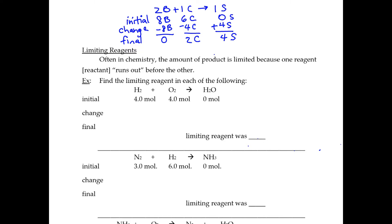So let's review. This is initially what we had — eight breads, six cheeses. We bridged from each one to the sandwiches to see which one would run out first. We figured out the bread ran out, so we used all the bread. We made four sandwiches and figured out how much cheese we needed with the bridge — four. These are all our leftovers at the end. We're going to use the same concept now but with chemistry and elements and compounds as opposed to bread and cheese.